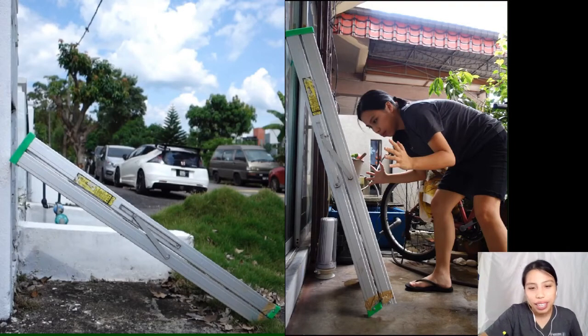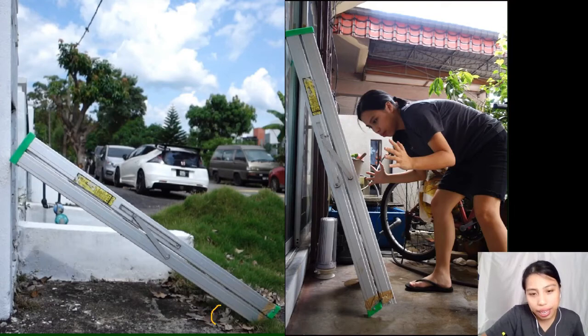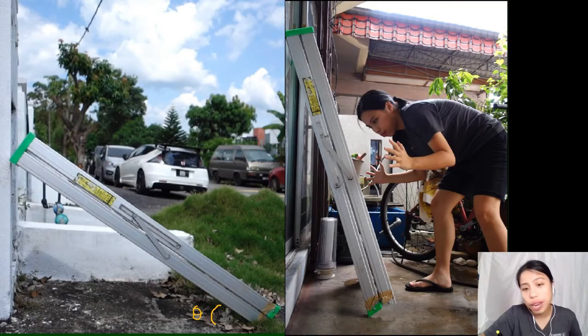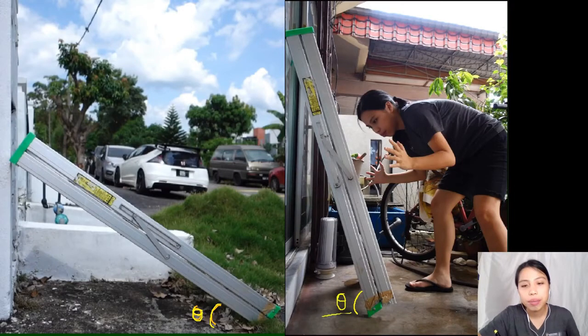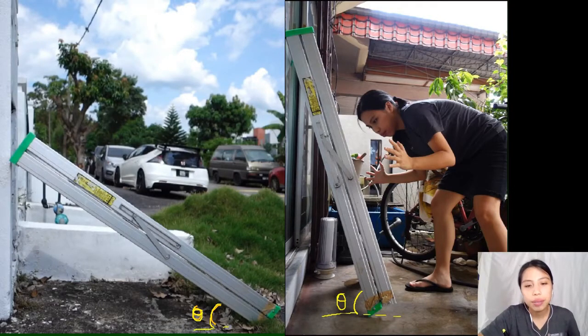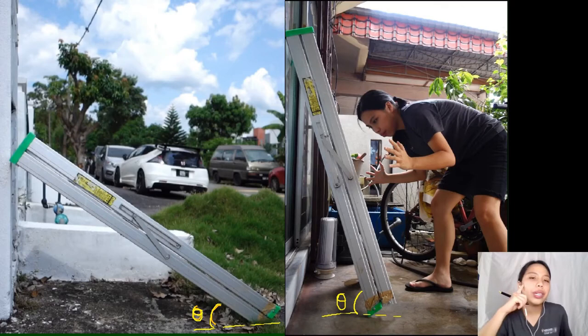But look at the difference. I cannot put the ladder much less steep. The first one, I can put it at an angle pretty small. I can go on to a very small angle and the ladder is still steady. No sliding. But the other one, such a big angle and it's already sliding. So what's going on? What's the difference between the two pictures?